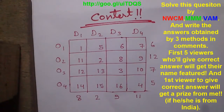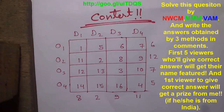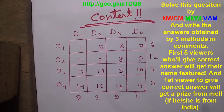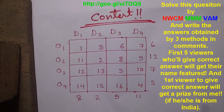The first 5 viewers who give the correct answer will get their name featured in the video. The first person to give the correct answer will get a prize from me if he or she is from India. Unfortunately, currently I can't provide any gift to outside India, so the prize is limited to India viewers only. But any viewer can comment, and whoever gives the correct answer will get their name featured in the video.